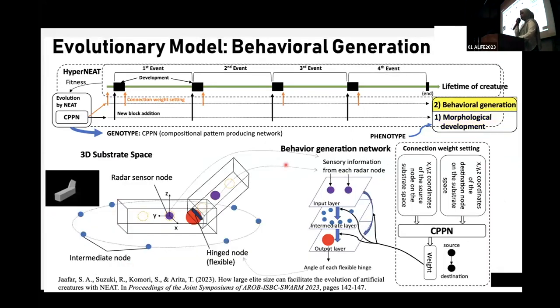After morphological development happens, the CPPN, the same CPPN, this time computes the weight connection of the behavior generation network that decides the angle of movement of flexible hinge by considering the input from the radar sensor that is obtained from each of the blocks, the purple node. The behavior generation network consists of three layers: input, intermediate, and output. Each of these nodes in these layers are taken from the actual 3D substrate space. The output of this network is the angle of the flexible hinge.